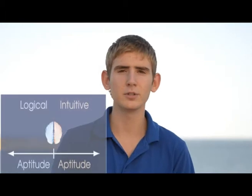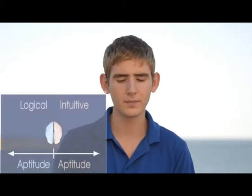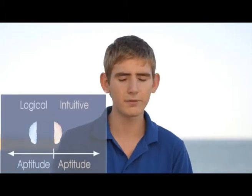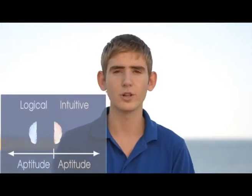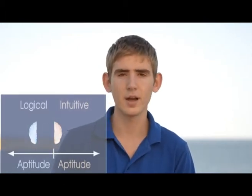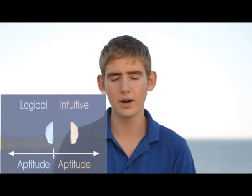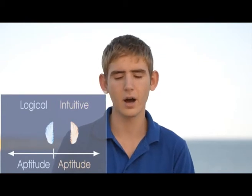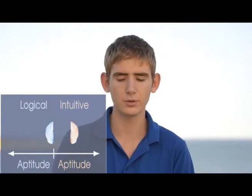This is the representation of your brain, and your brain can be broken into two parts. There is the left half, which is the logical side, and there is the right half, which is the intuitive. If we had a scale to measure the aptitude of each hemisphere, then we can plot our brain.